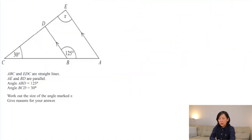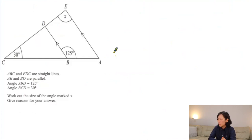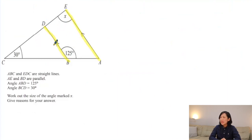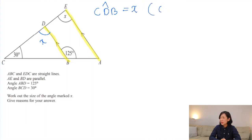Now this one is a bit special because we've got one triangle and then another triangle inside the bigger one. Identify your parallel lines — I can see a pair of parallel lines. Always notice your parallel lines; that's where we begin. Starting with the angles we already know: x and 125. Angle CDB equals x because it's a corresponding angle.